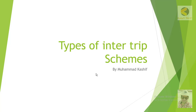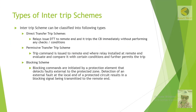Welcome friends. In this section we will study the details and types of intertrip schemes. Intertrip schemes can be classified into the following types. The first is the Direct Transfer Trip scheme, in which the relay issues a direct transfer trip command to the remote end, and it trips the circuit breaker immediately without performing any checks or conditions.